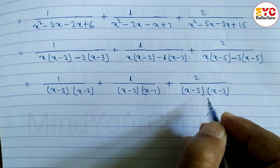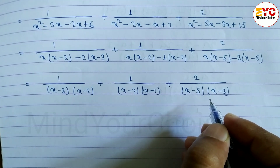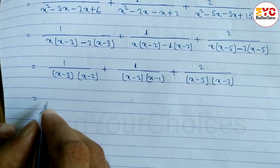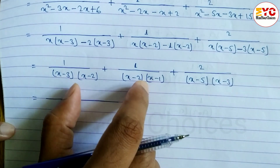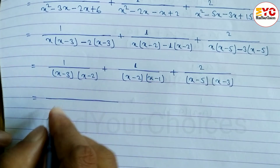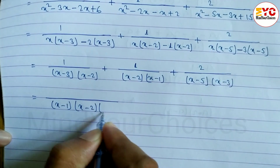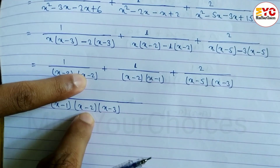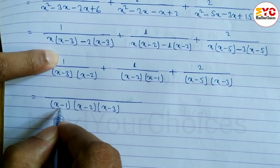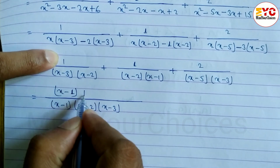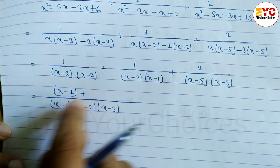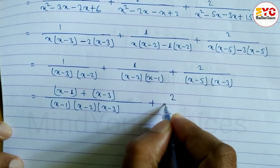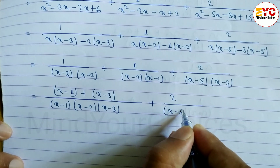After this, we have to take the LCM. First take the LCM of the first two fractions, then bring in the third. The LCM of (x − 3)(x − 2) and (x − 2)(x − 1) is (x − 1)(x − 2)(x − 3). Denominator divides: x minus 3 and x minus 2 cancel appropriately, leaving x minus 1 multiplied by 1, and x minus 3 multiplied by 1. Then divide the third fraction by x minus 5 and x minus 3.